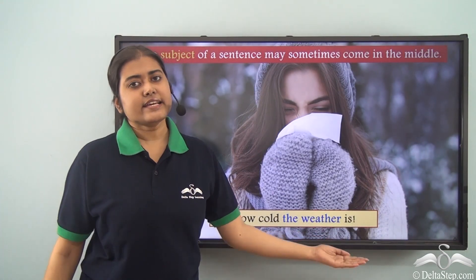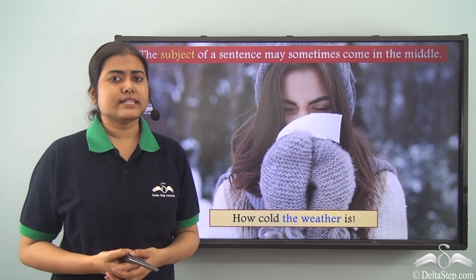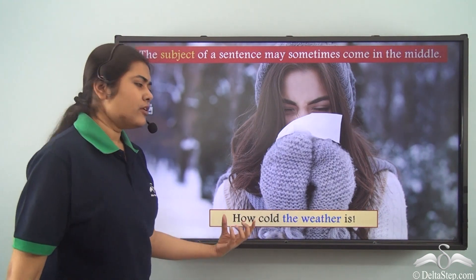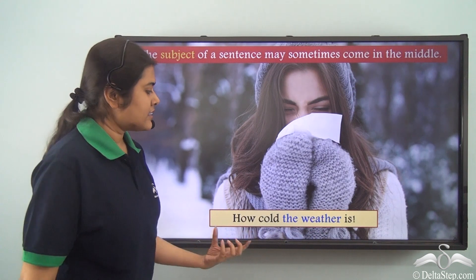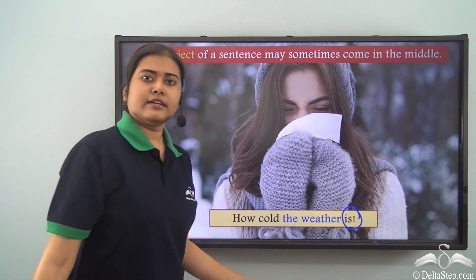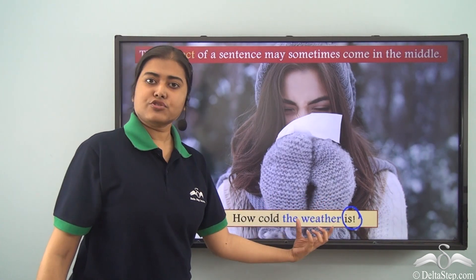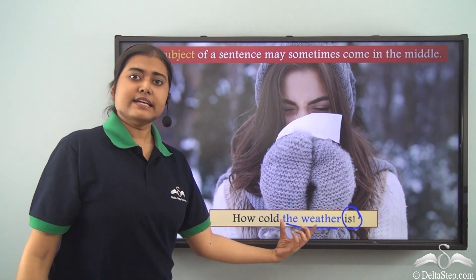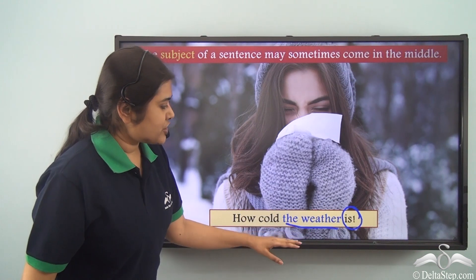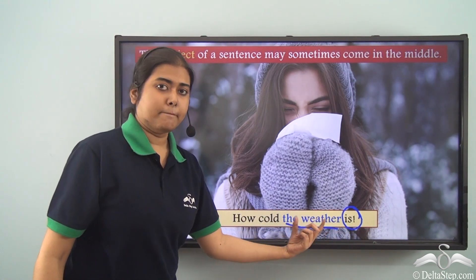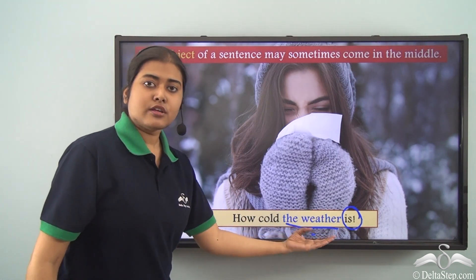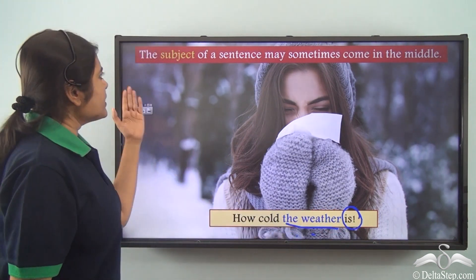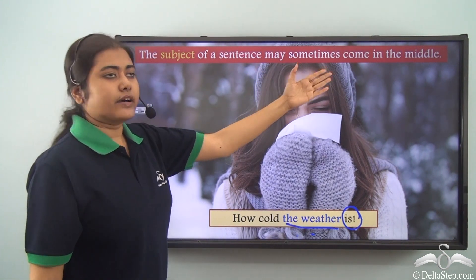'How cold the weather is!' This sentence is showing an exclamation — expressing a strong feeling. Let us identify the verb: it is 'is.' What is being referred to? The weather — so the subject here is 'the weather.' It comes before the verb but is in the middle of the sentence. A part of the sentence comes before it, and the verb follows the subject. So here too the subject is in the middle.